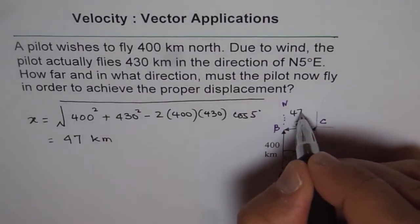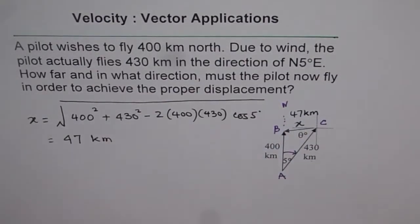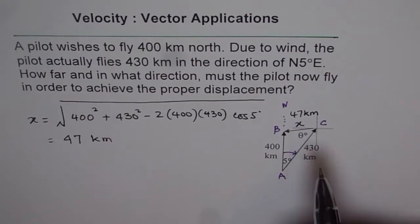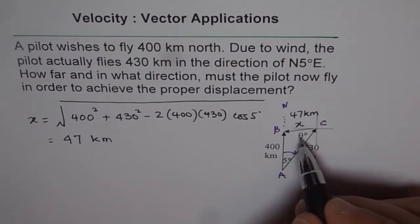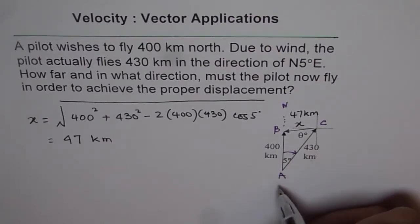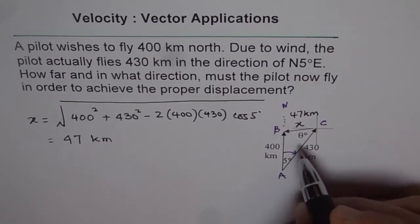The displacement is 47 kilometers. Now we get a triangle in which we know three sides. All the three sides are known to us and we need to find the angle theta. To find theta we can use sine law.